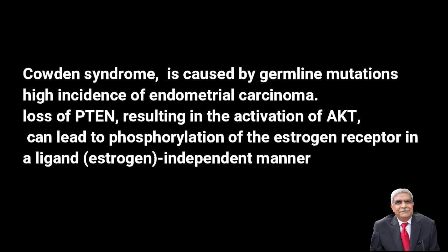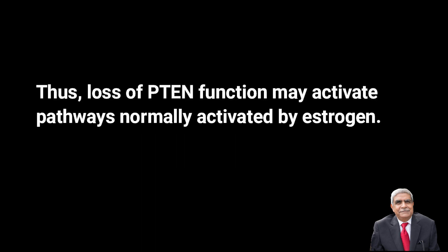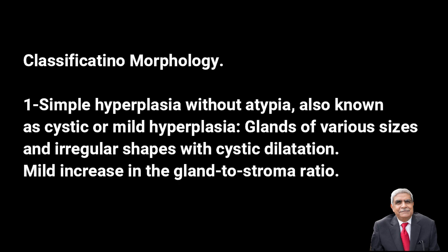Loss of PTEN results in activation of AKT, also called protein kinase B, which leads to phosphorylation of estrogen receptor in a ligand-independent manner. This means that loss of PTEN function may activate pathways that are normally activated by estrogens. We will now briefly discuss the classification and morphological features of various types of endometrial hyperplasia.